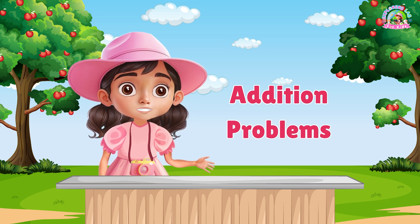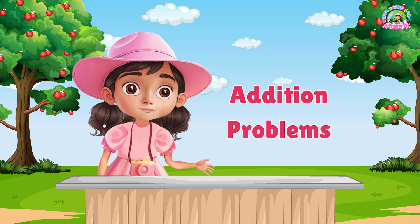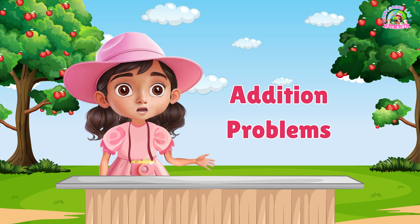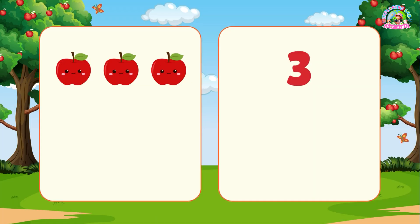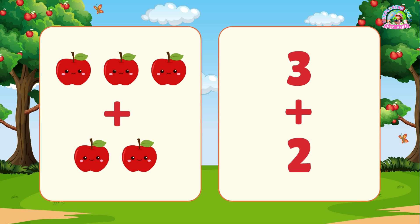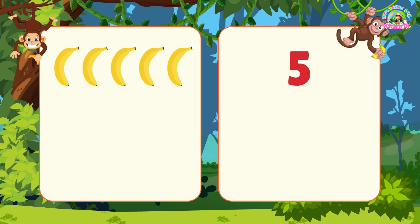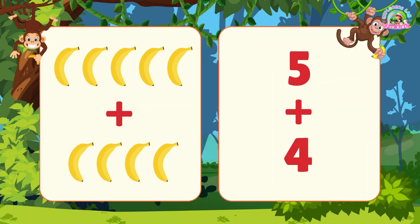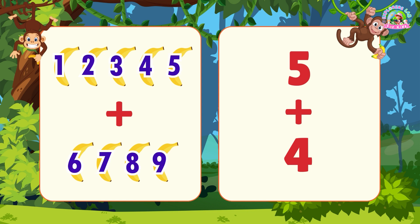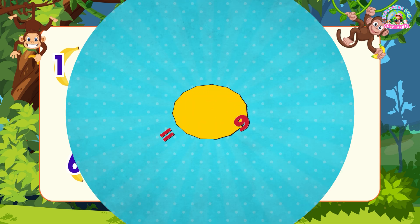I'll read each one and you can solve them. Are you ready? Let's go. I have three apples and I add two more. How many apples do I have in total? Five. There are five bananas. If I add four more, how many bananas are there? Nine.